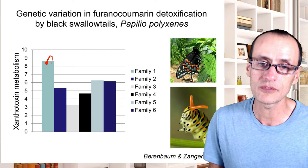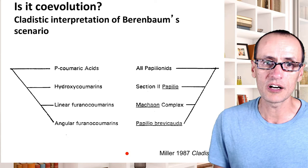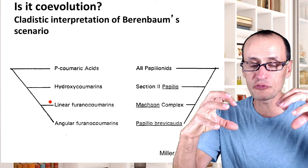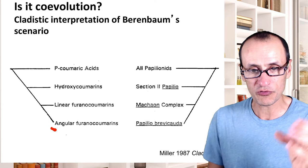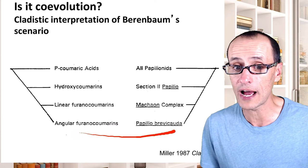There is now a mechanism — a detoxification enzyme — that is able to overcome those defenses and has the potential to confer selective advantage. In a classical interpretation of Berenbaum's scenario, there was an ancestral form of coumaric acids, then hydroxyl groups attached to the coumarins, then creating the furan group onto the coumarin, and then the angular form, making them more and more toxic. Whereas most papilionids could deal with the coumaric acids, fewer and fewer species could deal with the more derived forms like the angular furanocoumarins.